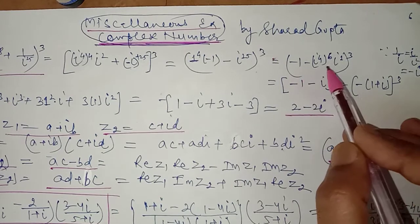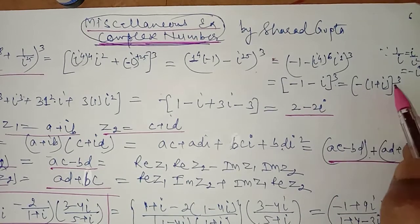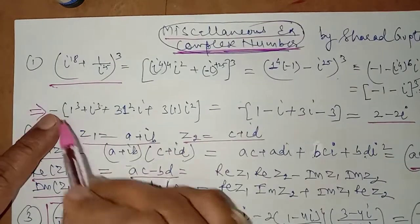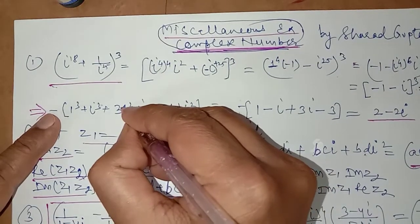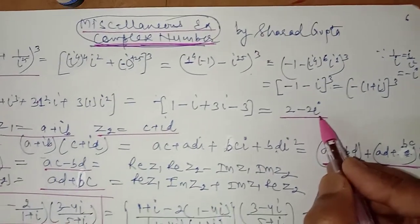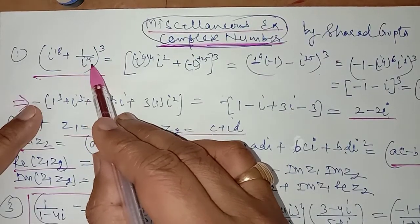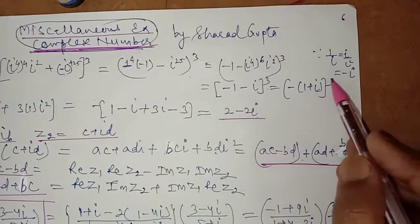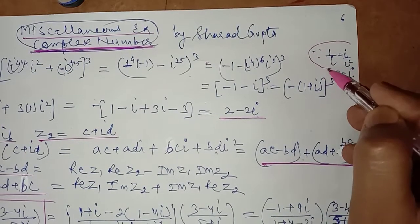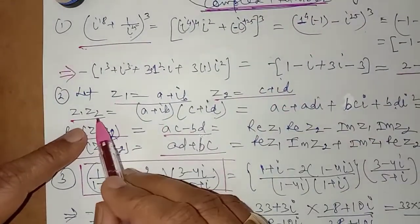This comes out to be minus 1 minus i raised to power 3. Take minus 1 common here, the cube of minus will give minus, and find the whole cube of (1 plus i) raised to power 3 using a³ + b³ + 3a²b + 3ab². On simplification you are getting 2 minus 2i, which is in the form a plus ib. Note that 1 upon i, when rationalized, equals i upon i square which equals minus i.